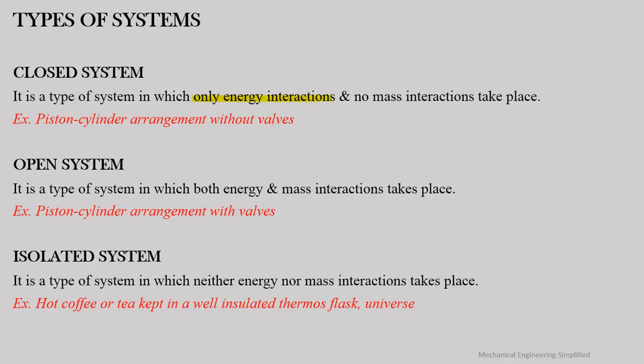An open system is a type of system in which both energy and mass interactions take place. Energy and mass can enter into the system and also can leave the system. An example is a piston-cylinder arrangement with valves.